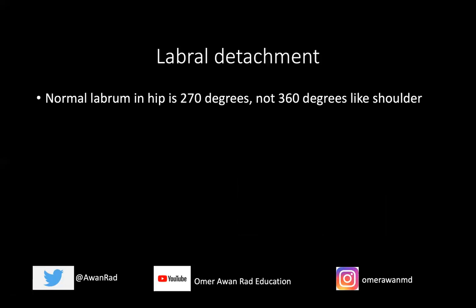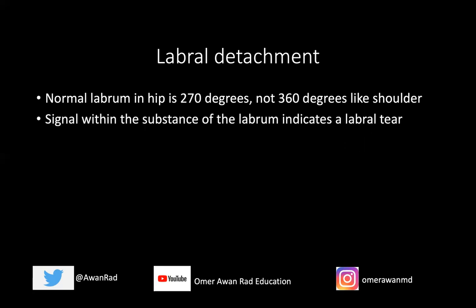The normal labrum in the hip is much different from the labrum in the shoulder. In the shoulder, the labrum is 360 degrees, going circumferentially around the entire glenoid. But in the hip, the labrum is only 270 degrees — it runs along the acetabulum from the anterior rim to the posterior rim — and the last 90 degrees is formed by the transverse ligament, which bridges the anterior and posterior rims. That's an important distinction when evaluating MRI hip versus shoulder arthrograms.